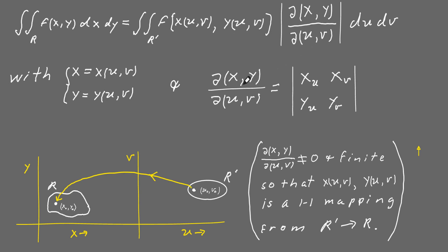When you have a Jacobian, every term in the numerator corresponds to a row in the matrix. So the first row has partial of x with respect to u, then partial of x with respect to v. The second row has partial of y with respect to u, then partial of y with respect to v. The bars represent the determinant — this times this minus this times this — but the bars in the formula represent the absolute value of the Jacobian.